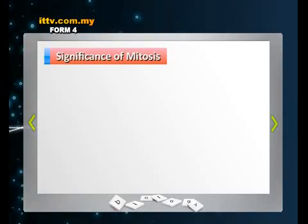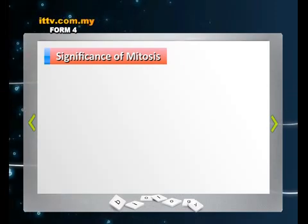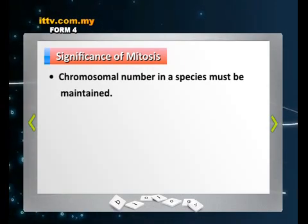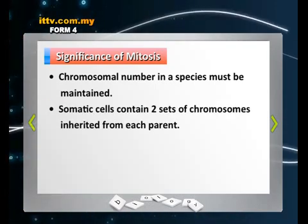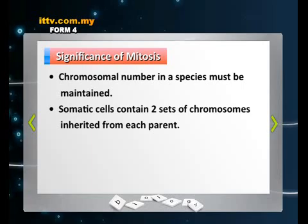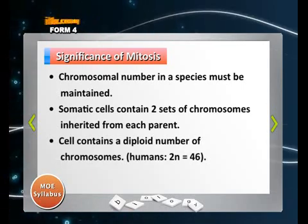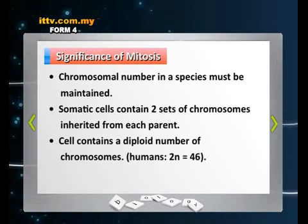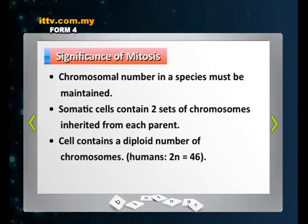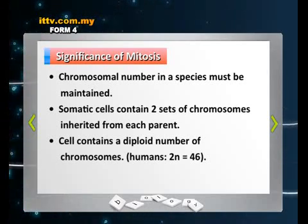Now let's carry on in detail about mitosis and the significance of mitosis. The chromosomal number in a species has to be maintained. The somatic cells contain two sets of chromosomes inherited from each parent. Each cell contains a diploid number of chromosomes, symbolized by the letters 2N. In humans, the diploid content is 46 chromosomes, which we can also call 23 pairs of chromosomes.